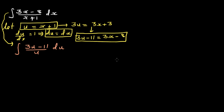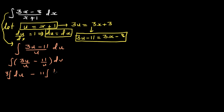You can pause this video and think about what I have done. Now I distribute u: this is the integration of 3u/u minus 11/u du, which simplifies to 3 times the integration of du minus 11 times the integration of 1/u du. This gives 3u minus 11 times the natural log of u plus C.